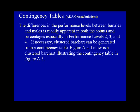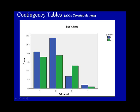The differences in the performance levels between females and males is readily apparent in both the counts and percentages, especially in performance levels 2, 3, and 4. If necessary, a clustered bar chart can be generated from a contingency table. Figure A4 is a clustered bar chart illustrating the contingency table in Figure A3.